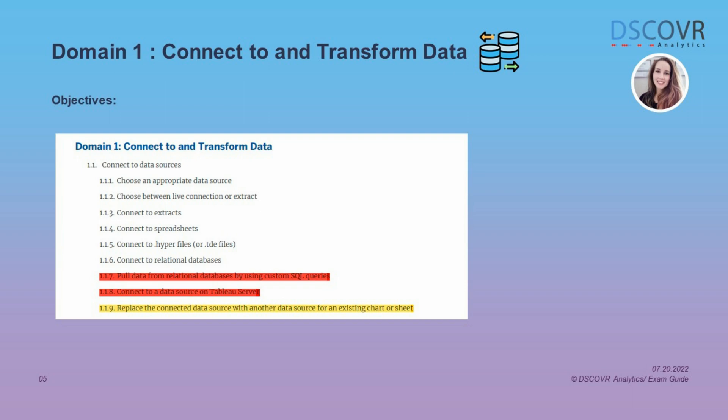Anything highlighted in yellow means that you should be able to perform any specific steps described in that subsection. For example, if you were given a workbook containing a visualization and then asked to replace the original data source with another data source, you should know how to do this and be able to describe the steps that you would take.